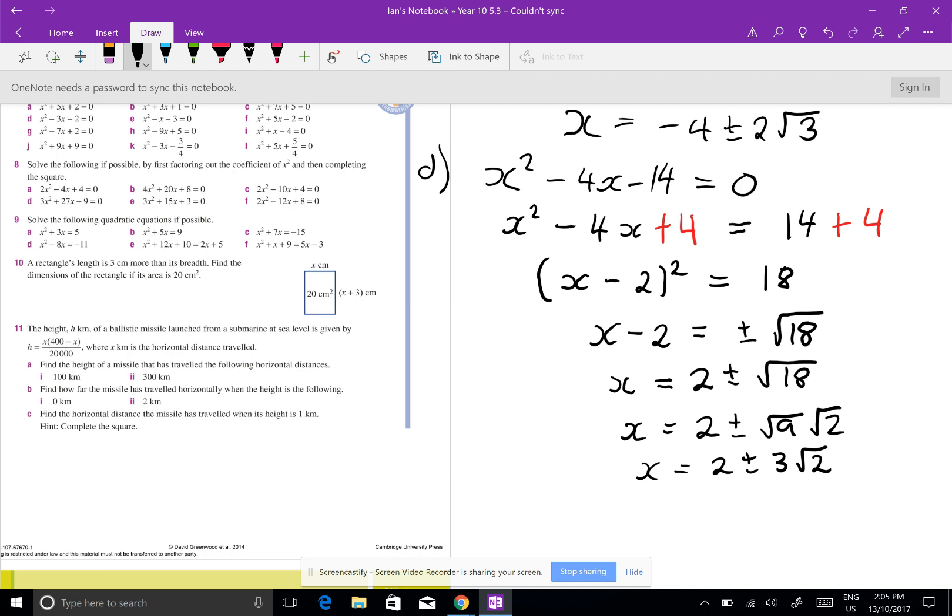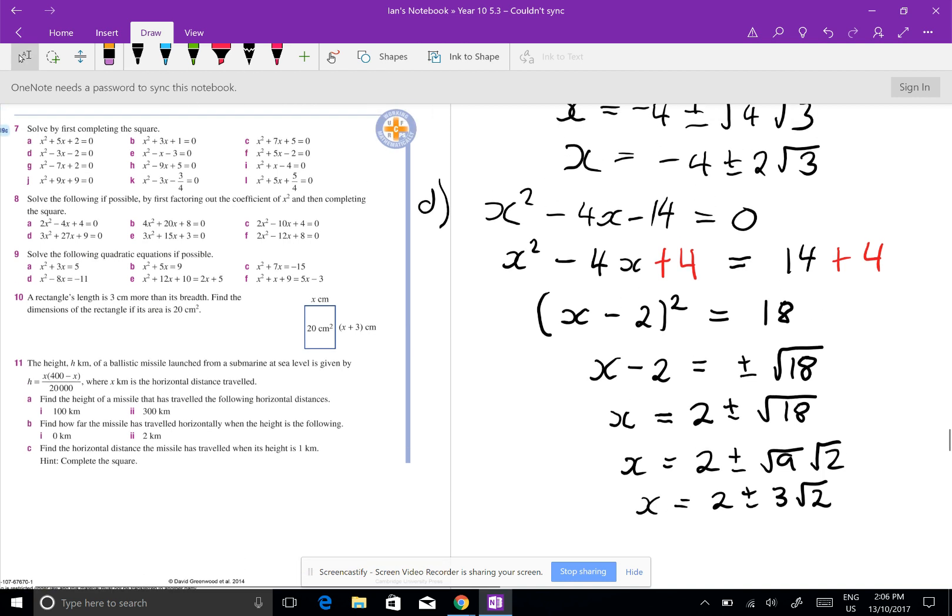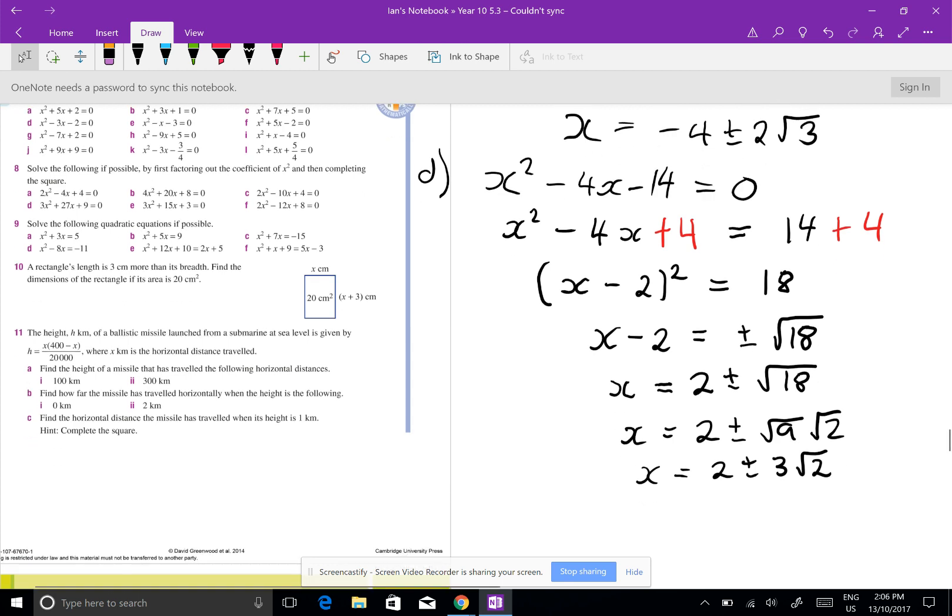So that's all you do. Now they're pretty easy because the coefficient of the x is an even number, and halving that and squaring that is easy. But what happens when the coefficient of the x is not an even number? So I'm going to do 7b and 7e because they're like the ones in the assignment.